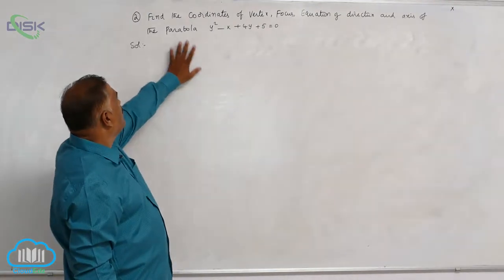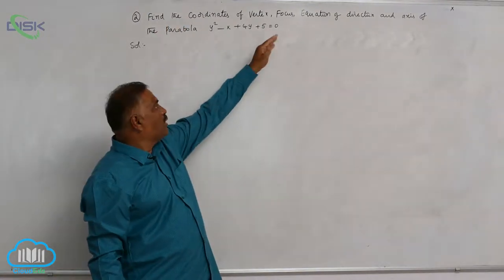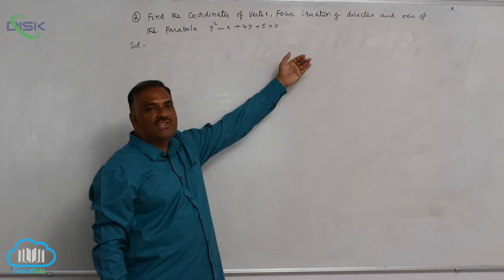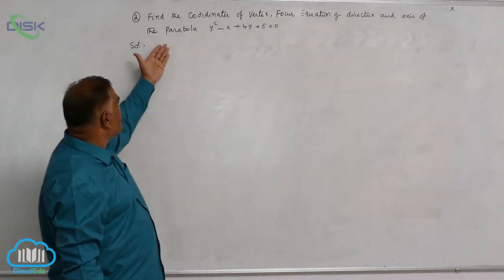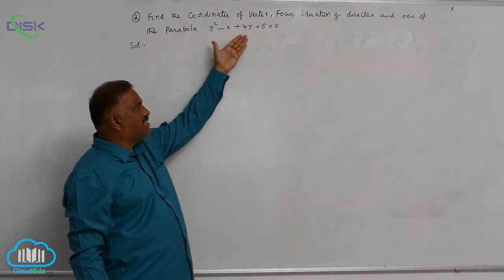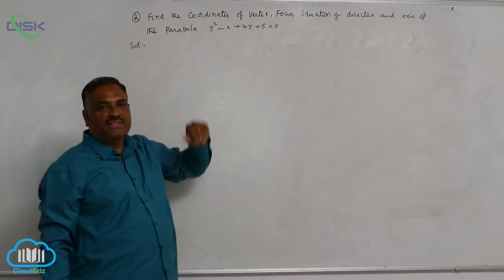We will discuss another problem here. Find the coordinates of vertex, focus, equation of directrix, and axis of the parabola y square minus x plus 4y plus 5 is equal to 0.